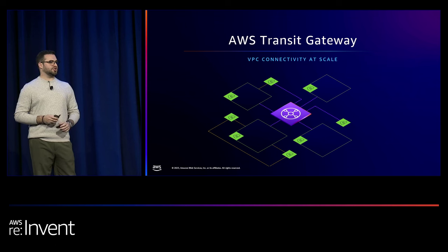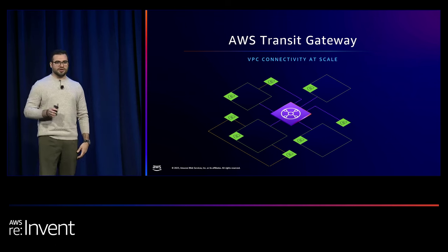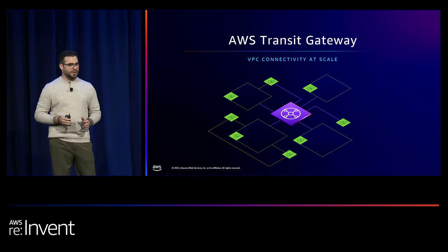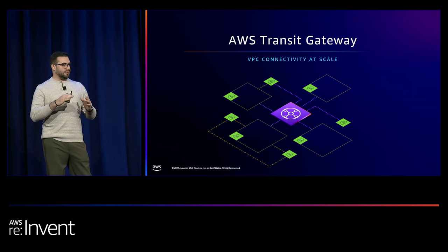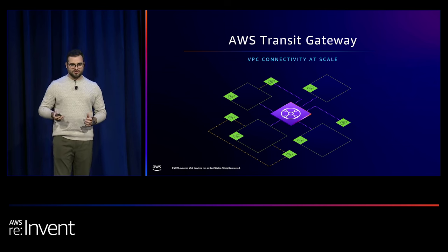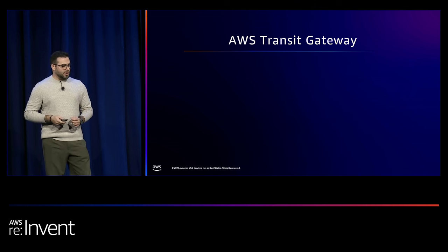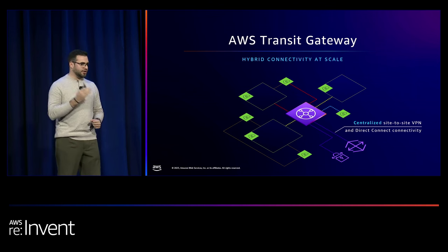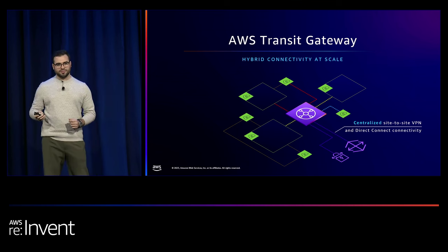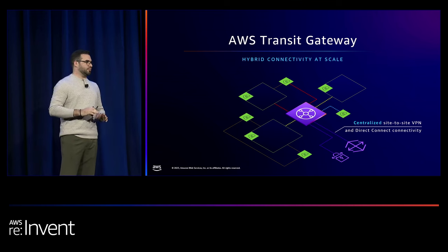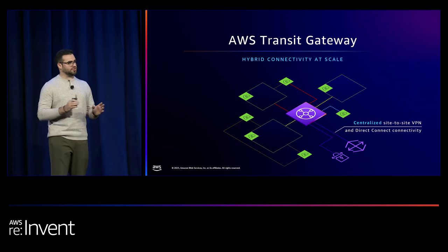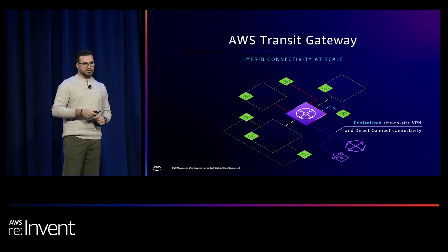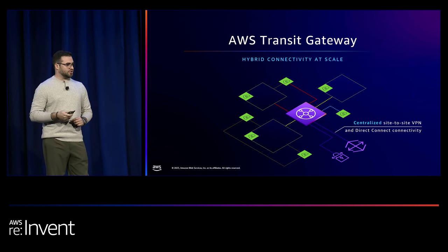In 2018, we decided to launch Transit Gateway. If you are not familiar with it, you can think of it as a regional router — logically speaking. Transit Gateway allows you to concentrate all of your connectivity within a region, and it scales to thousands of VPCs, solving that scaling problem. Transit Gateway also allows you, through integrations, to extend that connectivity to your on-premises — either through an integration with Direct Connect or with site-to-site VPNs. What you're seeing on screen right now became one of the most common patterns we see with customers. It's a best practice for most of our enterprise customers.